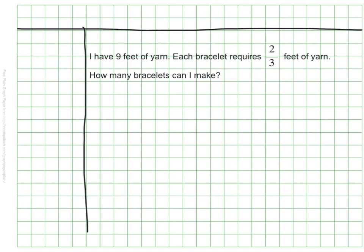So again, I have 9 wholes. I'm trying to divide it into groups of 2 thirds. And figure out how many times 2 thirds goes into 9. So I have my dividend, my divisor, and I'm working to find my quotient. Let me draw this out.